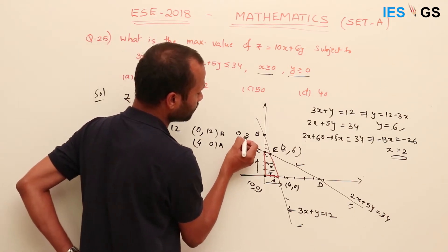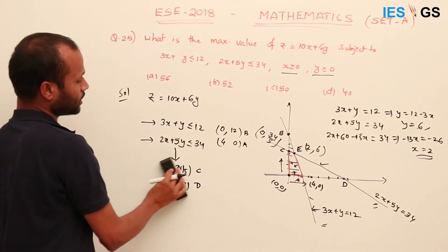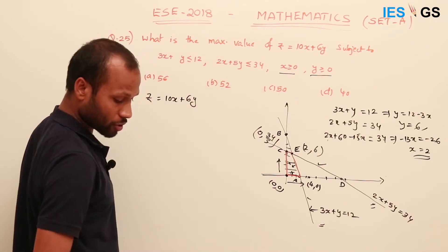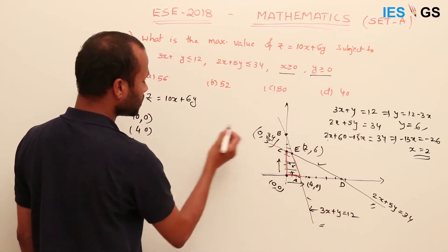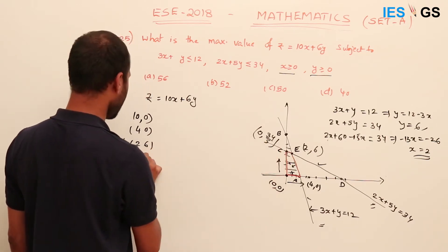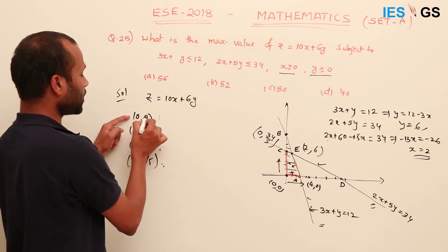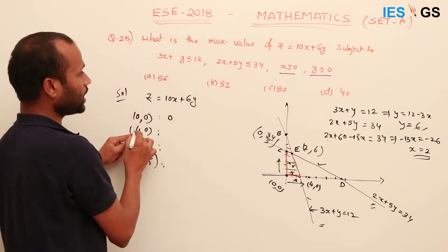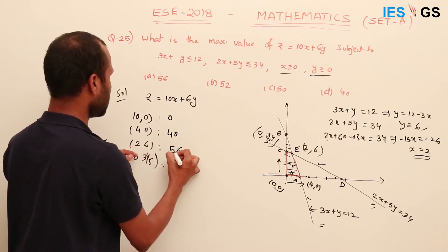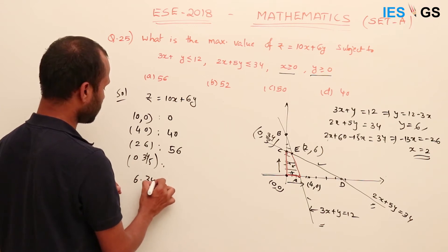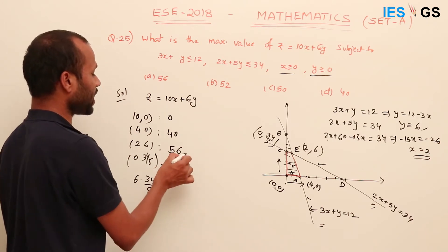The next bounding point C has coordinates (0, 34/5). So we have found our four bounding points: (0, 0), (4, 0), (2, 6), and (0, 34/5). Now substitute all these values into z = 10x + 6y. At (0,0): z = 0. At (4,0): z = 40. At (2,6): z = 20 + 36 = 56. At (0, 34/5): z ≈ 35.